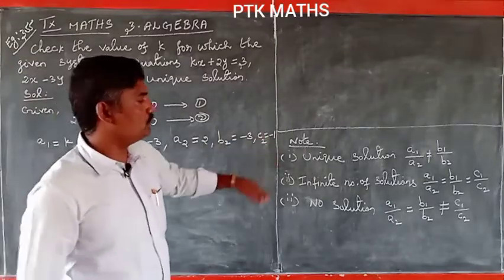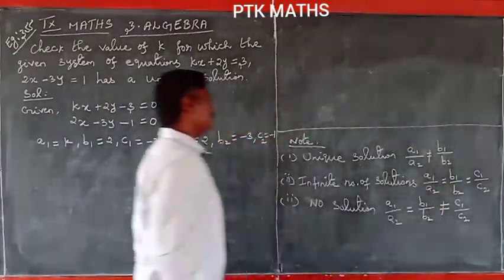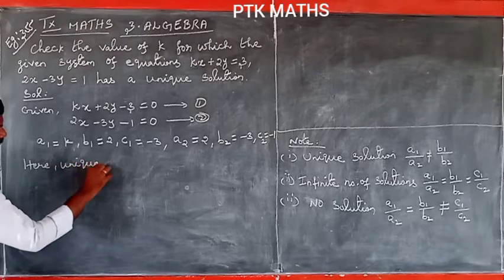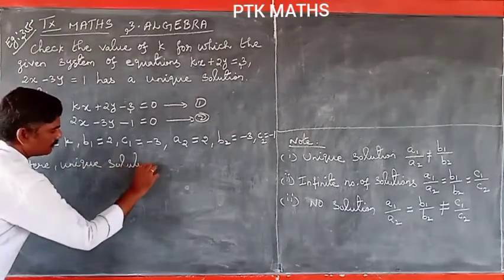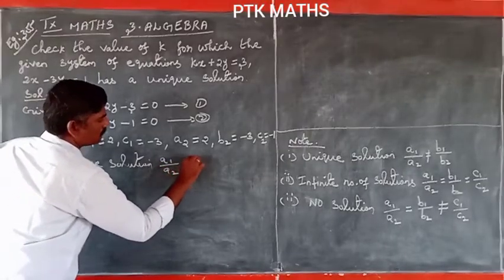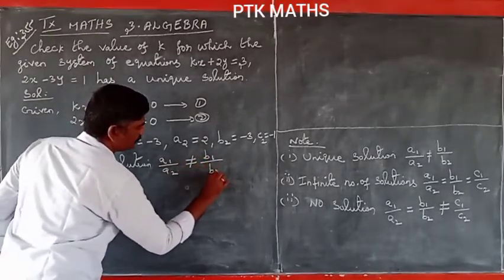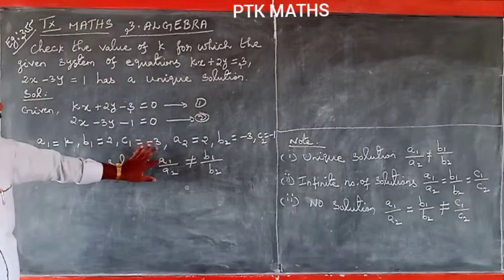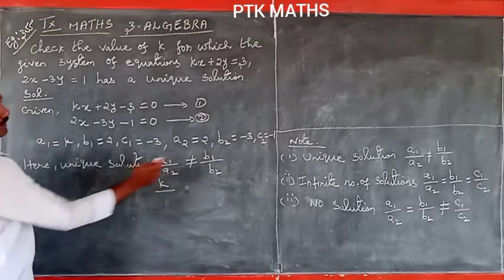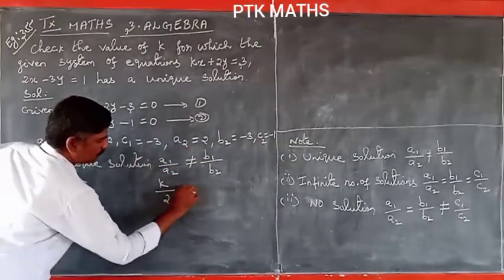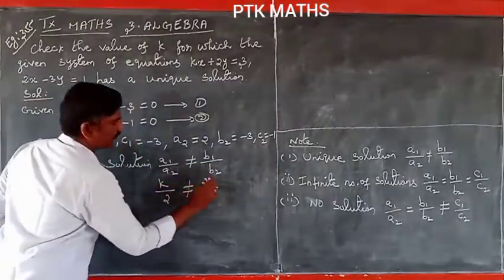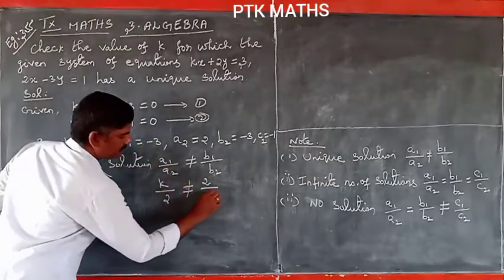So we have a1, b1, c1, a2, b2, c2 identified. For a unique solution, we use the condition: a1 by a2 not equal to b1 by b2. Here, a1 is k, a2 is 2, b1 is 2, and b2 is minus 3.